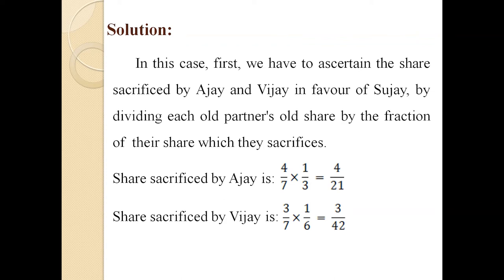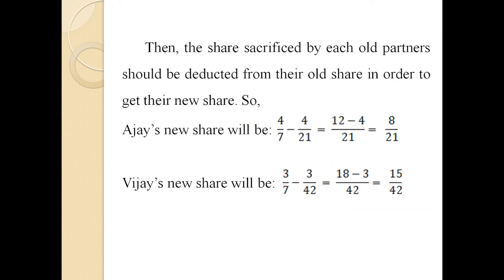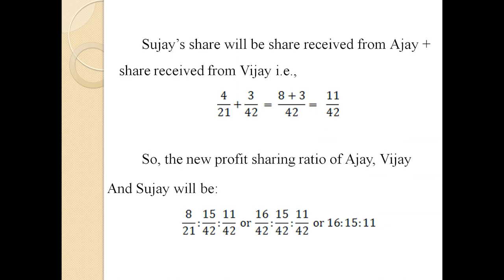Share sacrificed by Ajay: 4/7 × 1/3 = 4/21. Share sacrificed by Vijay: 3/7 × 1/6 = 3/42. Then deduct these from old shares: Ajay's new share = 4/7 − 4/21 = 8/21. Vijay's new share = 3/7 − 3/42 = 15/42. Sujai's share = share received from Ajay + share received from Vijay = 4/21 + 3/42 = 11/42. So the new profit sharing ratio of Ajay : Vijay : Sujai = 8/21 : 15/42 : 11/42, or 16 : 15 : 11.